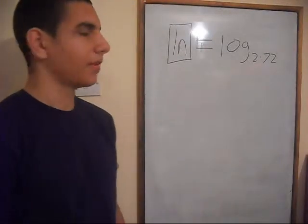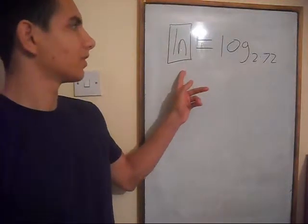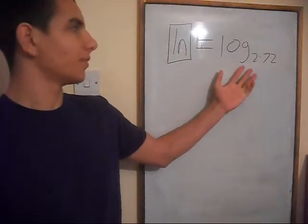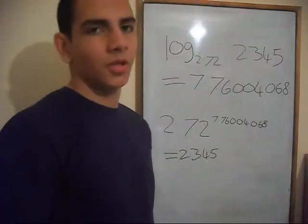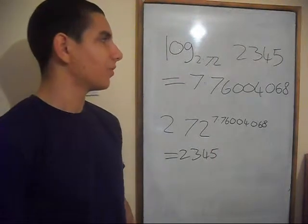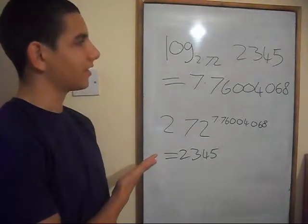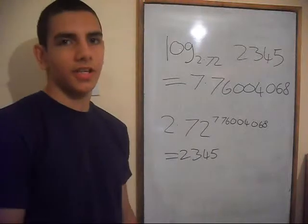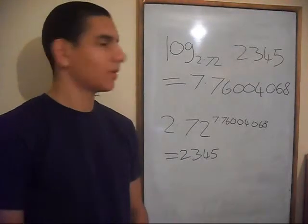But getting back to the point of the video. This button does a log to a base of 2.72. So if you catch on fast or you've done this before, you should be thinking that this is obvious. If it's not, take a look. It's the same as what we did before.